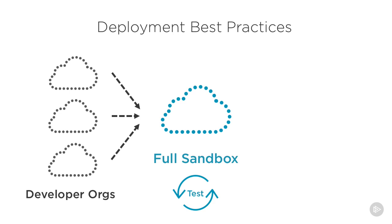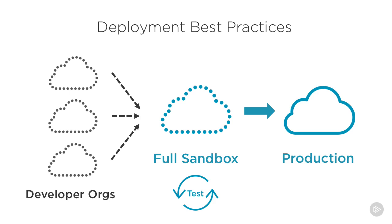This is important to do in a full sandbox org because you don't know if your code works well with real data instead of fake data created just for testing. For example, data in your full sandbox might not have certain fields populated, and the absence of this information could break your code. Finally, once things are stable in your full sandbox, your components would be given the green light to deploy into production, and after that you'd probably do another round of testing just to be safe.